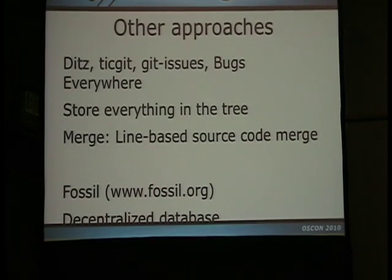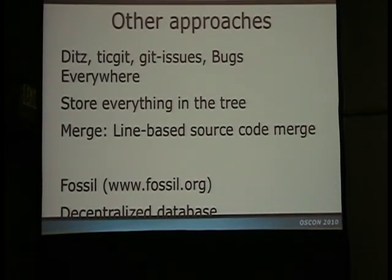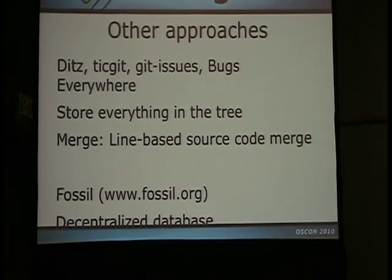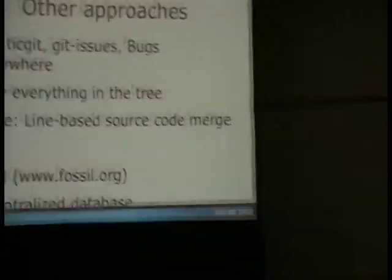We're not the first ones trying to go after this area. A lot of people are trying to solve what we call the distributed bug-tracking problem — Dits, Tick-it, Git Issues, Bugs Everywhere. The model they're basically using is: store everything in the tree. It's not the worst solution, but my complaint is that the merge algorithms for source code are not the right merge algorithms for database stuff. Databases have all kinds of extra information we can use to make a better merge, and these approaches don't let that information be used.